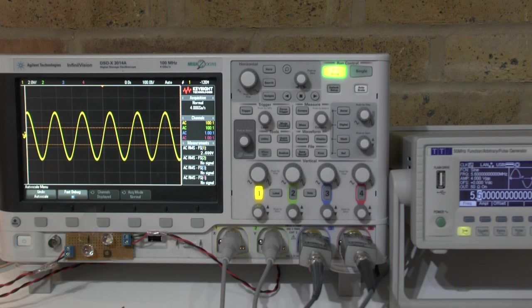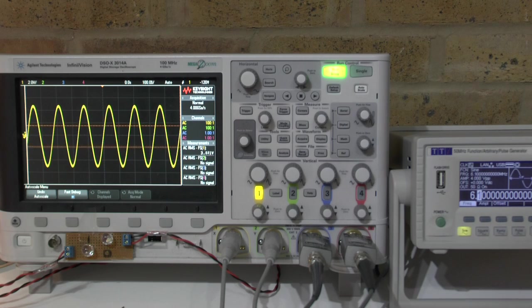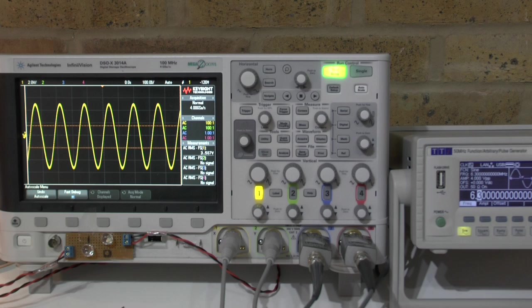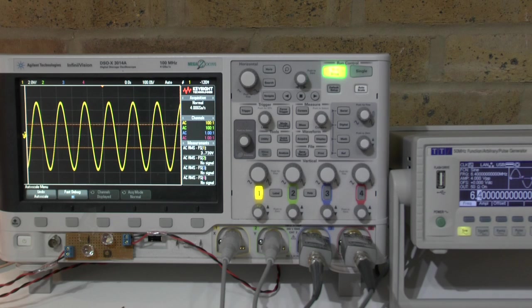I scroll up slowly. We are at 6.3, 6.4. So 6.4 MHz is my final resonant frequency. I measure 3.8 volt RMS on the oscilloscope.